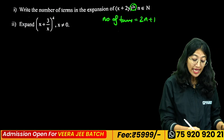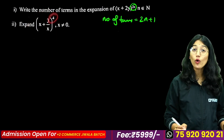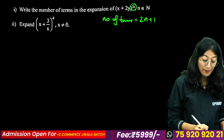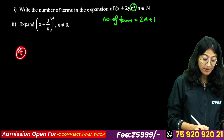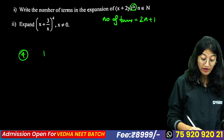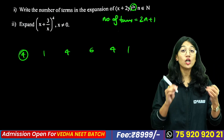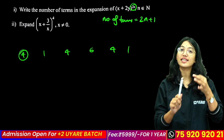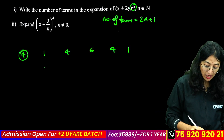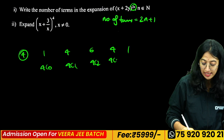If you look at the expansion of (x + 1) raised to 4, you will see the number of terms. We use Pascal's triangle. The coefficients are 1, 4, 6, 4, 1. If you look at n = 4, you will see 5 terms. The terms are: 4C0, 4C1, 4C2, 4C3, 4C4.